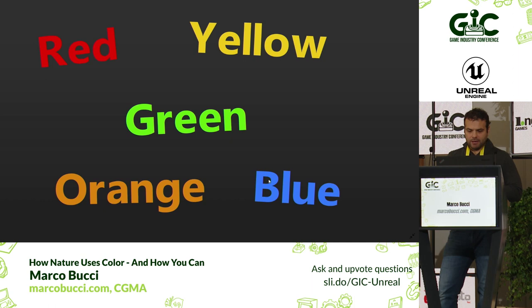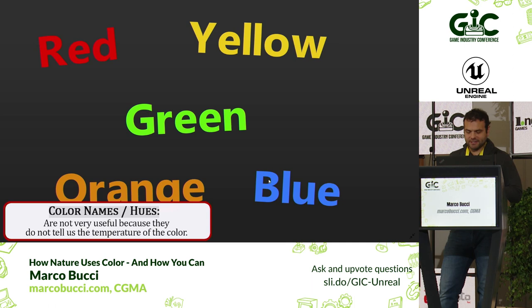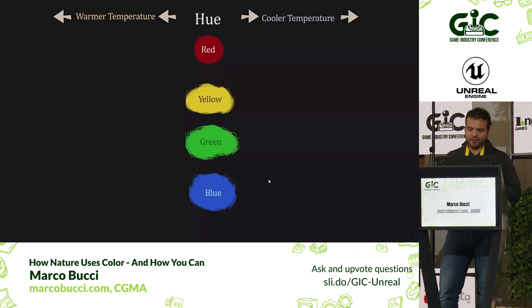Hue names are basically useless — they're useful for my two-year-old daughter asking for purple, but for us as artists this is not useful enough. Color names do not tell us the temperature of the color. Temperature — warmer, cooler — we need to know the temperature. This is how we need to think about color.